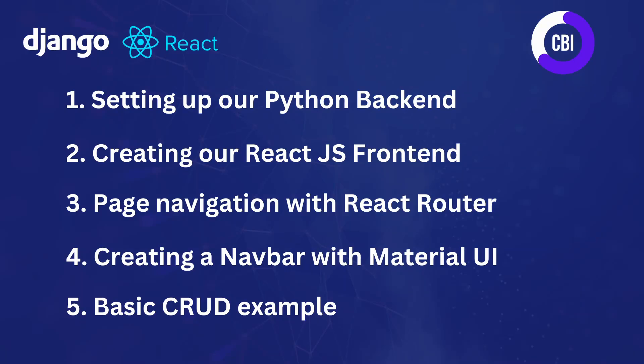Hi everyone and welcome to a new video on the CBI channel. This is the start of a brand new tutorial series in which we're going to create a full stack application with Python Django as the backend and React.js as the frontend. Over the course of this tutorial we'll be focusing on five activities. The first one, and also the focus of this video, is setting up our Python backend. In the next video I'll show you how to create the React.js frontend and make the backend and frontend communicate with each other. In the following videos we will focus on page navigation with React Router, creating a navbar with Material UI components, and a basic example of how you can create, read, update and delete records using the database.